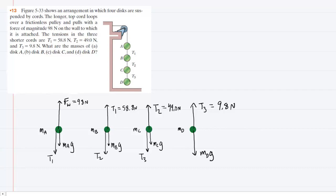you can see that disk C is connected by this rope that is marked tension 3. And so what we have is a tension force that is pulling up on that disk, and we've labeled that T3, and we've put in the given value of 9.8 Newtons.